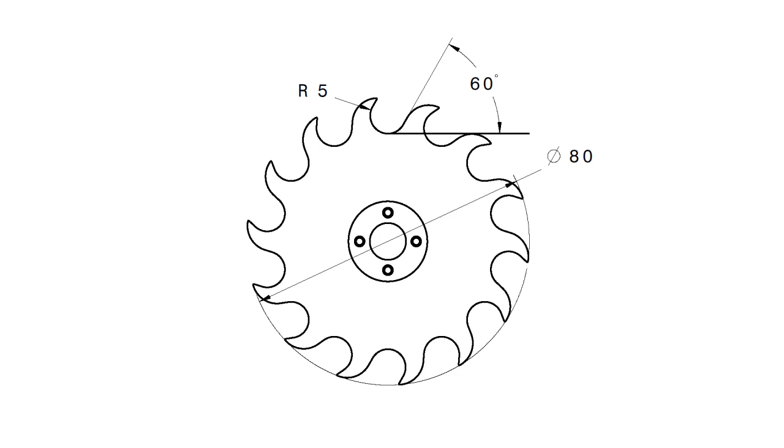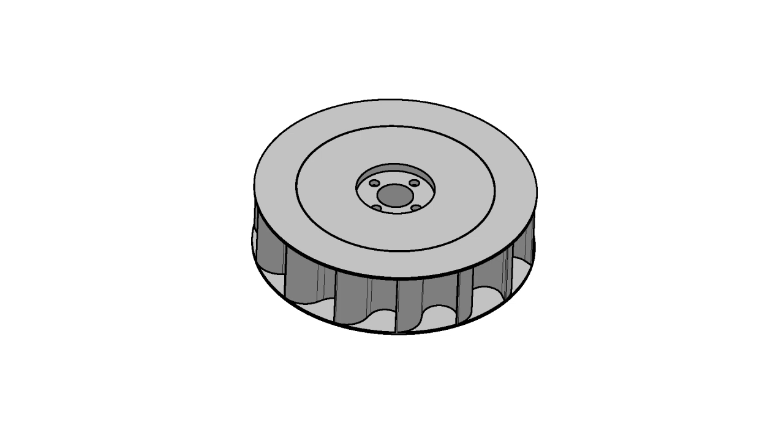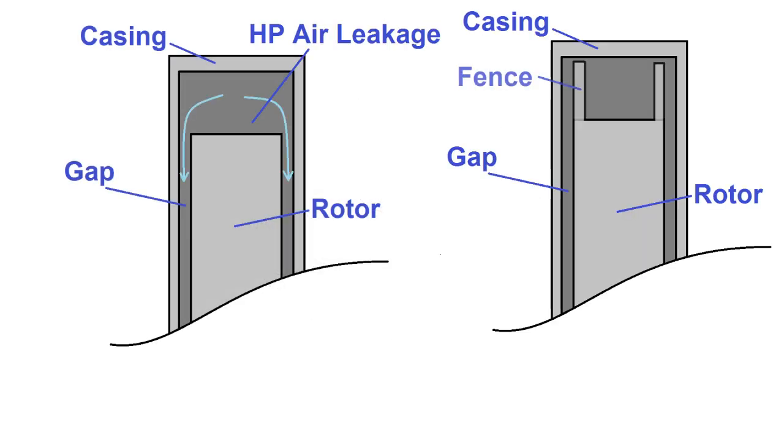There wasn't really any room to add more blades using my current notch radius, so the next thing I tried was putting fences on the side of the rotor. My thinking here was that these might delay the leakage of the air around the sides of the rotor, thereby allowing a little more time to extract energy from the pockets of high pressure air inside the notches.